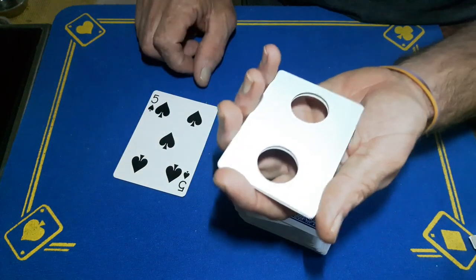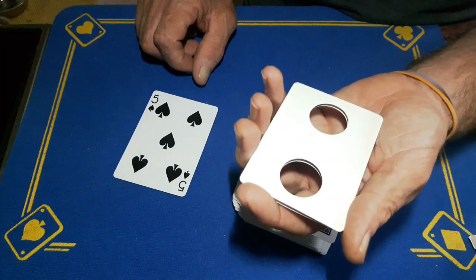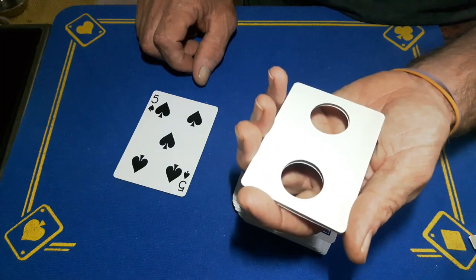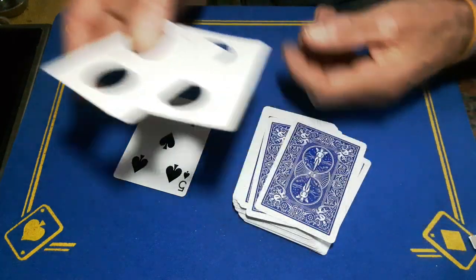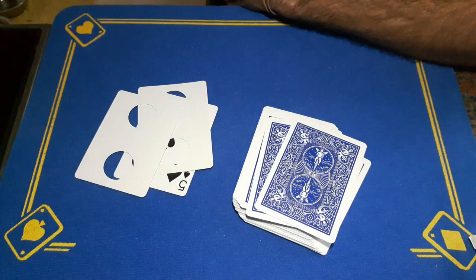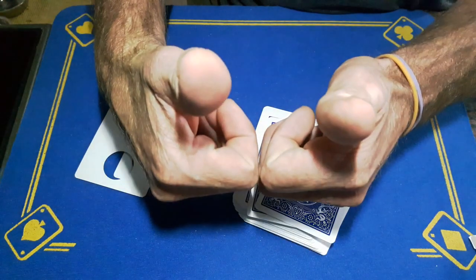So like I say, these are for sale. It's not an expensive little packet trick - does get a fantastic reaction. So if anybody is interested, shoot me an email and we can sort it out. So that is how you do Monkey in the Middle. Comment, subscribe, like guys for more reveals. Cheers.